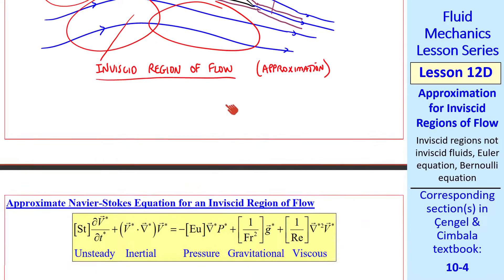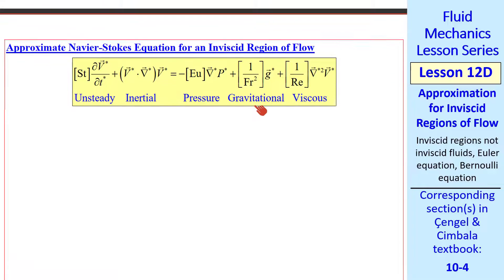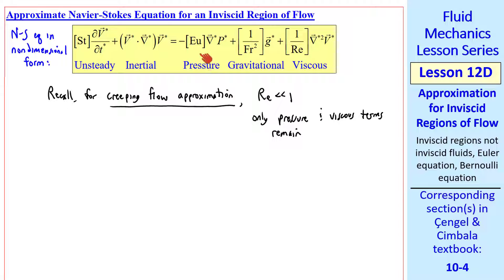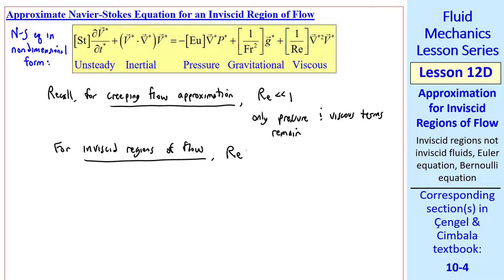Now let's look at the equations. We'll approximate the Navier-Stokes equation for an inviscid region of flow. Here's the Navier-Stokes equation in non-dimensional form, where I've labeled the five terms as in previous lessons. Recall that for the creeping flow approximation, Reynolds number was very small, and only the pressure and the viscous terms remain in the equation. For inviscid regions of flow, we have the opposite condition, namely that Reynolds number is much greater than one. That makes this viscous term negligible compared to the other terms, provided that we've properly normalized this Navier-Stokes equation.